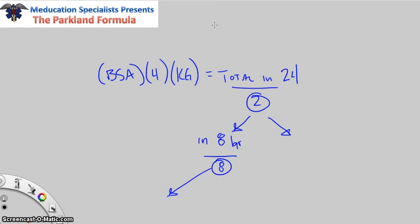Here's our structure. Body surface area times 4 times kilograms gives us total in 24 hours. We divide by 2, then divide by 8. Divide by 2 gives us total fluid in 8 hours, and over here would be total fluid in 16. We take that 8, divide by 8—that gives us the flow rate per hour. This is what we put on the pump. This is what we know exactly to give.